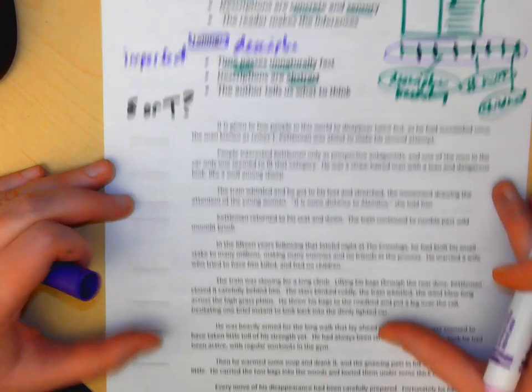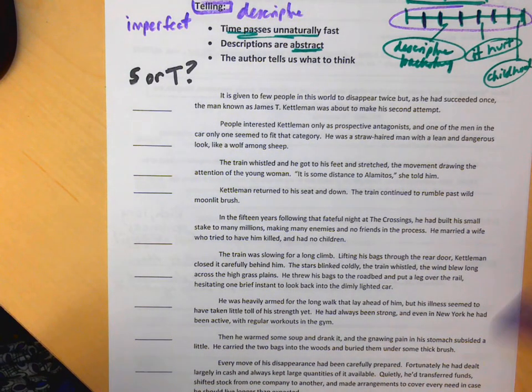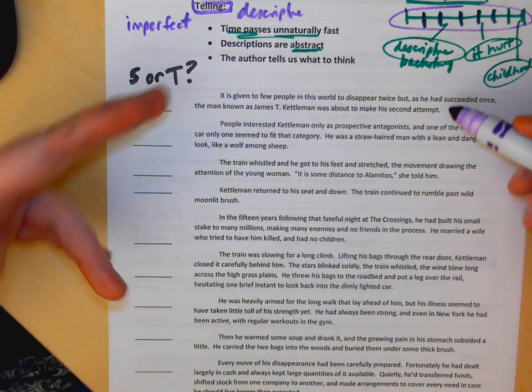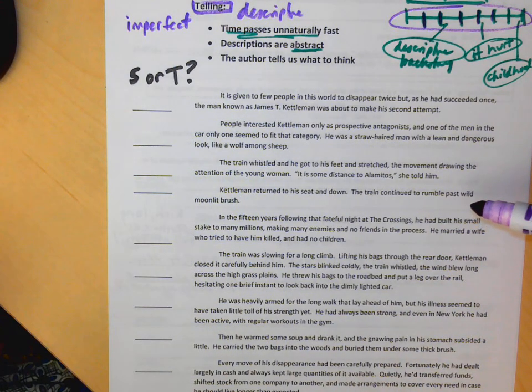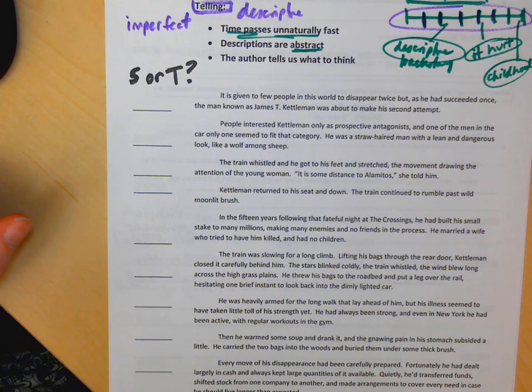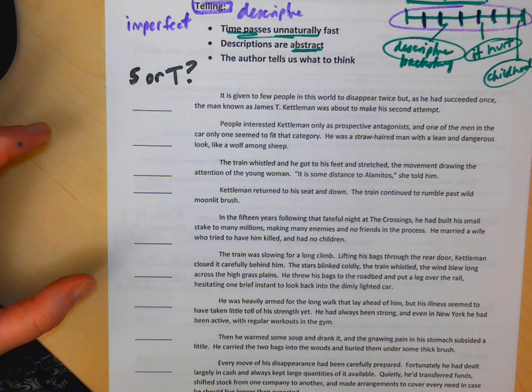Our little story here comes from a book called Flint by Louis L'Amour. It's a western. We actually have a guy on a train, and the things are in order as they occur, but things are left out so they're just kind of random to prove a point here. I'm going to get you started and then have you finish on your own. It is given to few people in this world to disappear twice, but as he had succeeded once, the man known as James T. Kettleman was about to make his second attempt. This is the first line of the book.